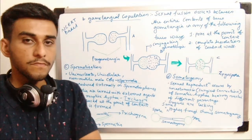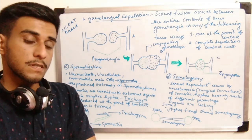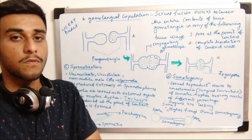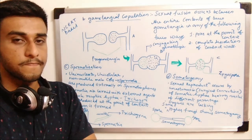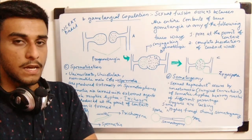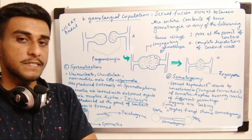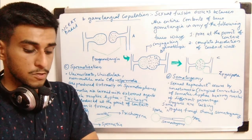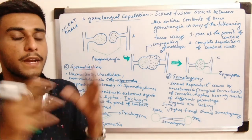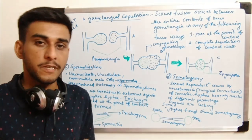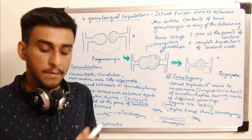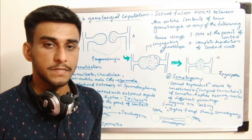The next method is gametangial copulation. In gametangial contact, two gametangia come in contact and transfer nuclei. In gametangial copulation, two different hyphae of different parentage come together, and at the point of contact they may transfer both of their content to form a common structure known as the zygospore.